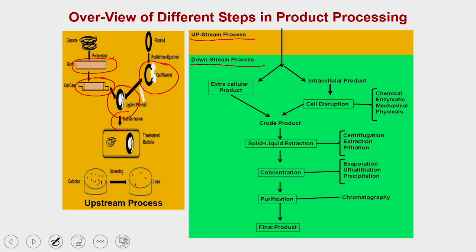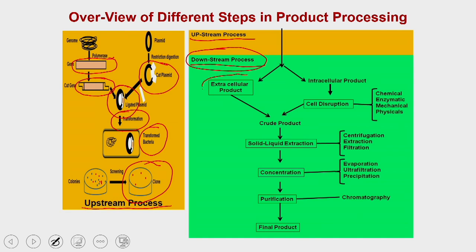We then put the recombinant clone into bacteria to generate genetically modified organisms, and screen these organisms for desired features. All these processes are considered upstream processes. Once you have generated the product, it comes into downstream processing.